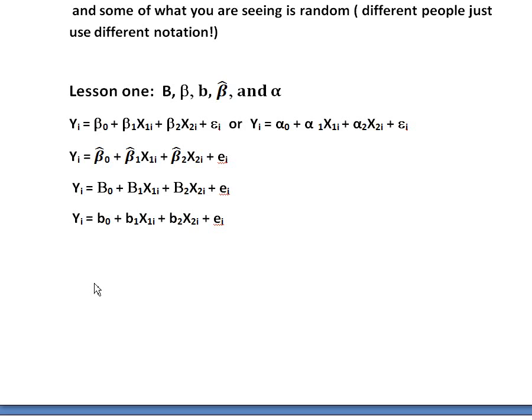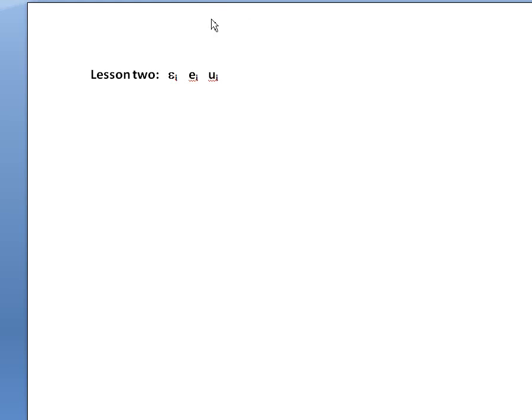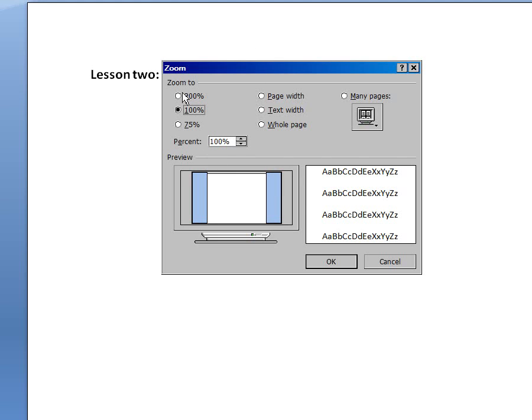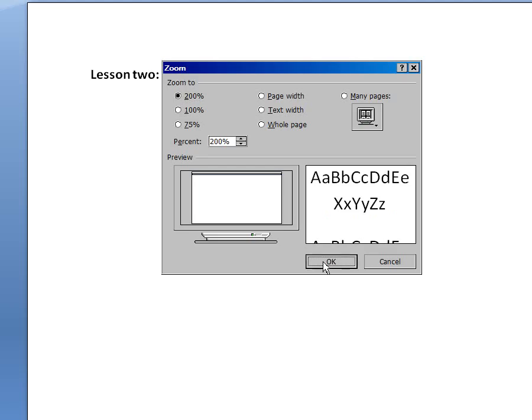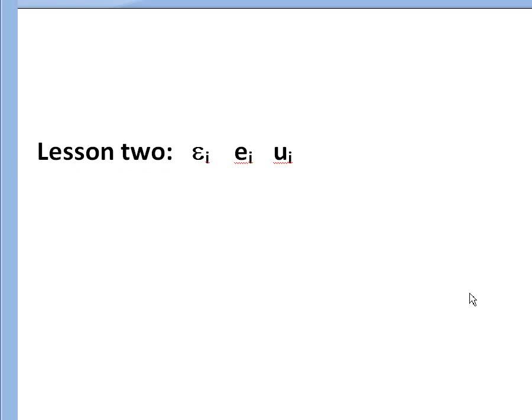But in general, beta population value or alpha sometimes, beta hats or lowercase b's are almost always going to be used for estimates in my experience, but be careful. Now the second lesson, the second thing that you see sometimes that can mess you up, let me zoom in here so that we can see this more clearly.